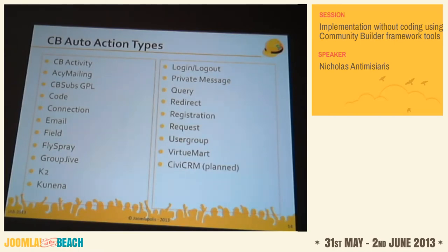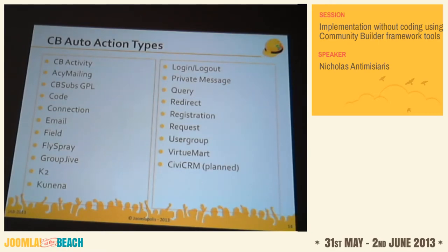Available action types include: adding events to the activity stream, an ACMailing newsletter action to add or remove users from newsletters, CB Subs activities, code activities where you can write PHP code or push CSS code, run a jQuery function, execute a database query, push data to external database tables, and more. We're also working on a CB CRM action to load the CiviCRM API and push CB data fields to CiviCRM fields.